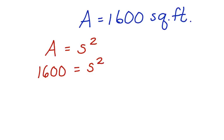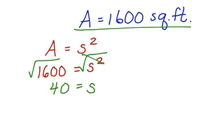Now, we want to get S alone. So we take the square root of both sides. The square root of 1,600 is 40. If the area of the platform was 1,600 square feet, that would mean that the side length would be equal to 40 feet.